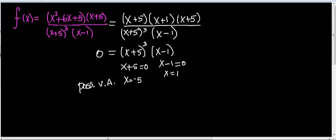We check these values in the numerator. If I get a zero in the numerator, I have to determine if it's a vertical asymptote or a hole. If I do not get zero in the numerator, it's definitely a vertical asymptote. Let's check negative 5: negative 5 plus 5 is 0. I got a zero in this factor, and zero times anything is zero, so I already know I'll get zero in the numerator at x equals negative 5.